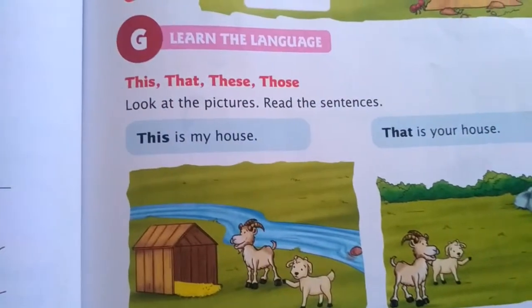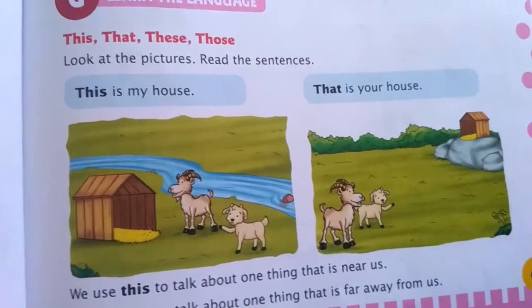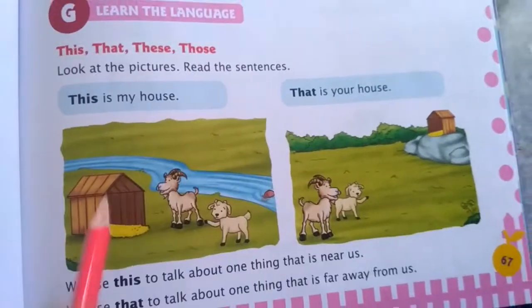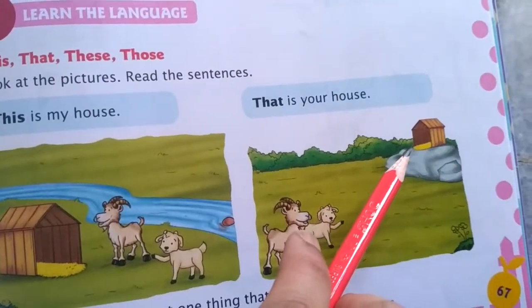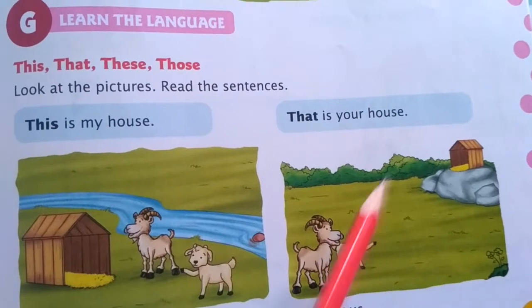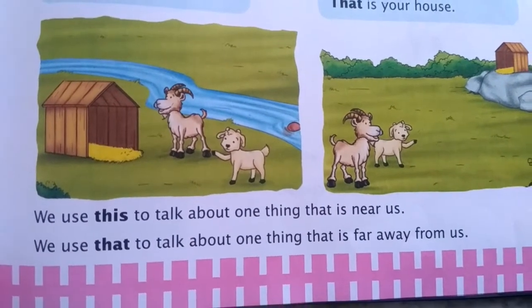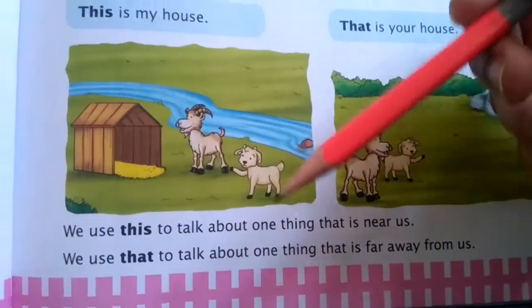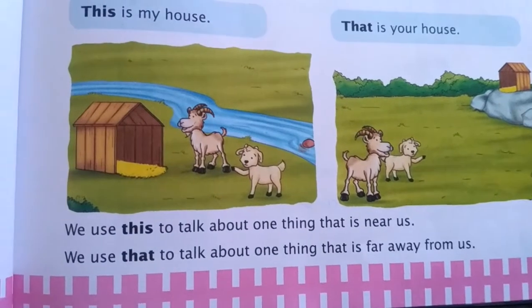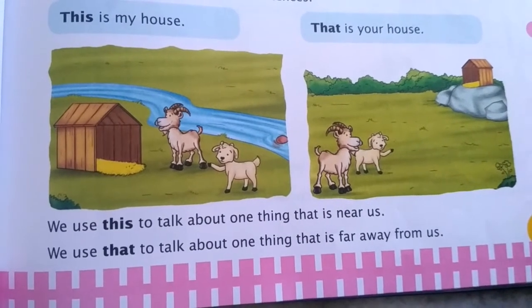In the 'Learn the Language' portion, we will learn about this, that, these, and those. First, we will look at the pictures. There are two goats: one is pointing to a nearby house saying 'this is my house,' and the other goat is pointing to a house that is far away saying 'that is your house.' So basically, we use 'this' to talk about one thing that is near to us, and 'that' to represent something that is far from us.